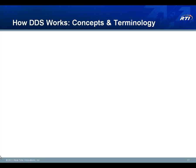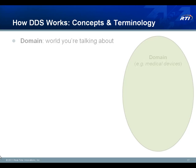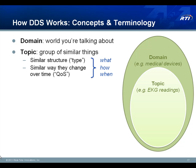Let's dig into some specific concepts and terminology you'll encounter when working with DDS. The world of all the things you're interested in within a particular subsystem is called a domain — a way to isolate one subsystem from another. For example, suppose we're in a hospital with many medical devices that exchange information. Within that domain, you'll have what are called topics. If you're using DDS in a data-centric way, a topic is more than just an abstract destination — it's a group of similar things in the world of interest, similar both in terms of their structure and in the way they can be observed to change over time. In DDS, that's called the quality of service.